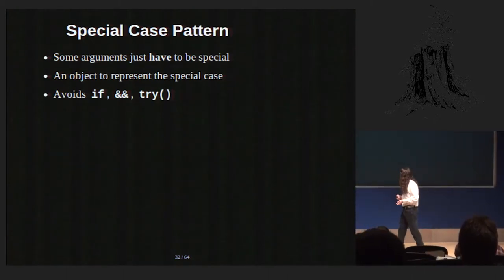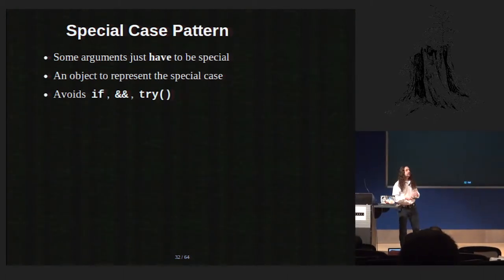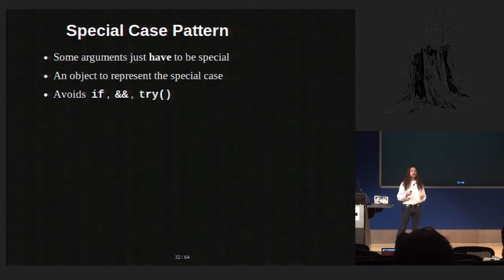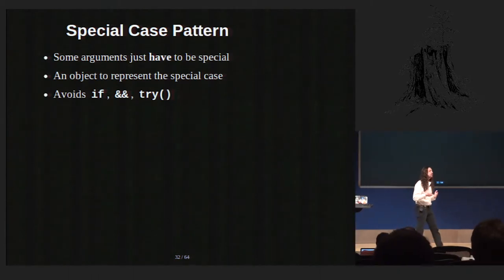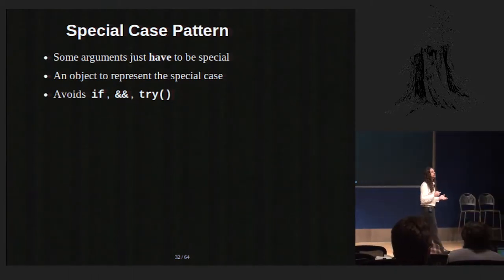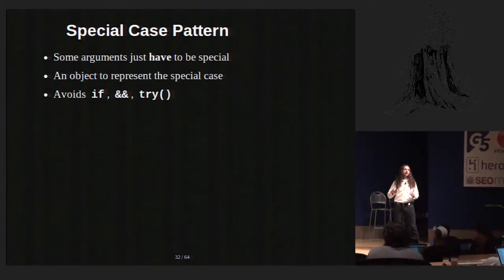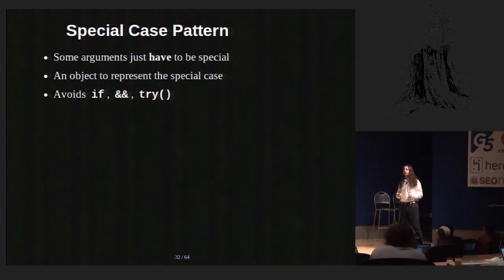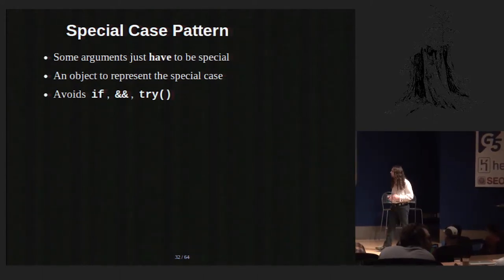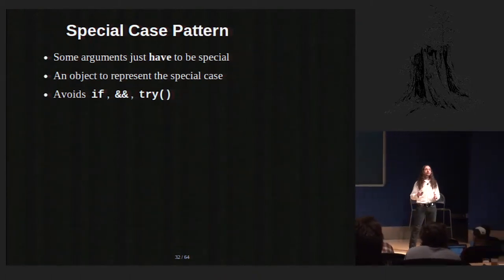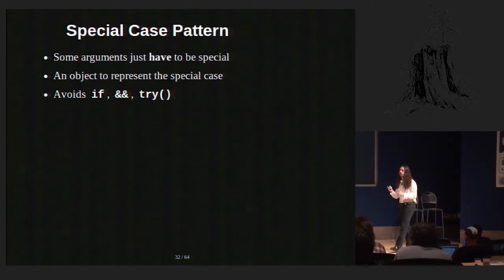Some arguments have to be special. In any reasonably complex method, there are often some kind of special case you can't avoid. An object-oriented way to deal with special cases — like special flags — rather than putting a lot of if statements in, is to create an object which represents that special case. When you do this, you find you can avoid a lot of if statements. You can avoid things like try, which are basically compressed if statements.